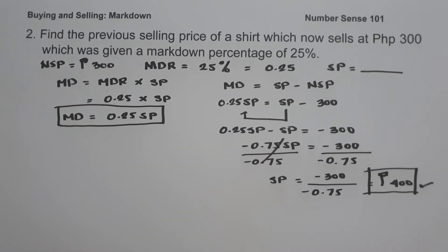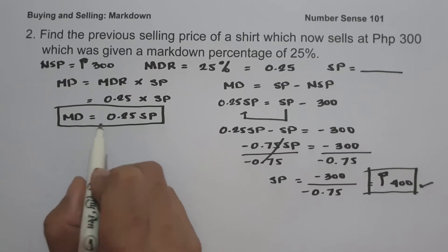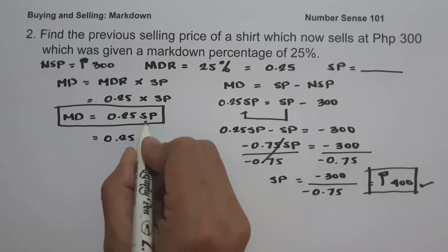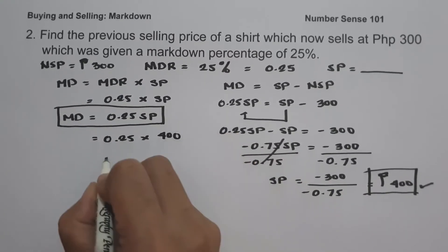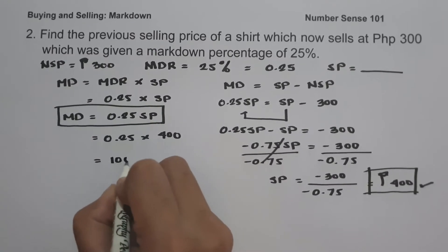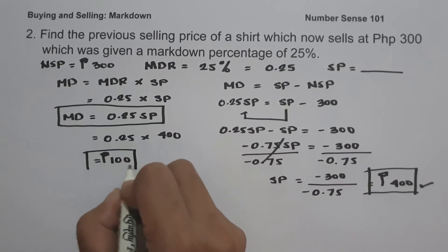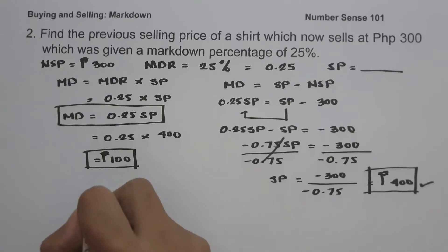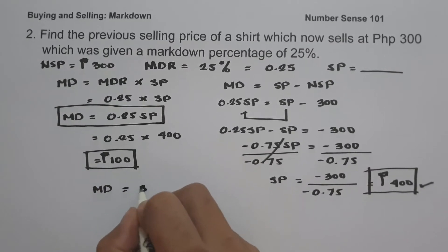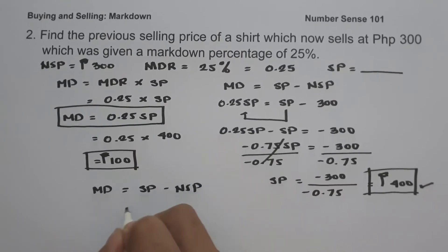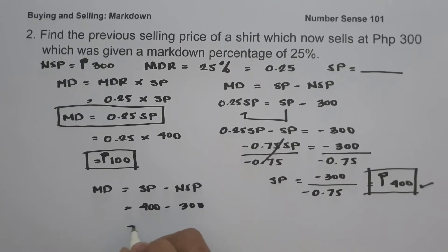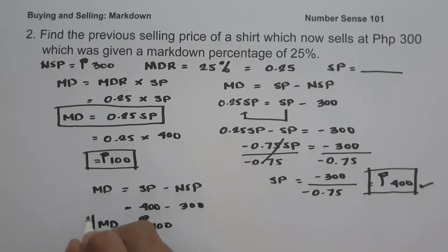To find the markdown, we use: markdown equals 0.25 times selling price of 400, which gives us 100 pesos. To check: markdown equals selling price minus new selling price, so 400 minus 300 equals 100. We come up with the same markdown, confirming our answer is correct.